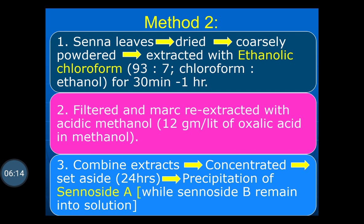In Method 2 for extraction of sennosides from Senna, the Senna leaves are taken, dried, coarsely powdered and extracted with ethanolic chloroform. This ethanolic chloroform is prepared by taking chloroform and ethanol in a ratio of 93:7, and the extraction is done for 30 minutes to 1 hour. The marc is then separated by filtration.